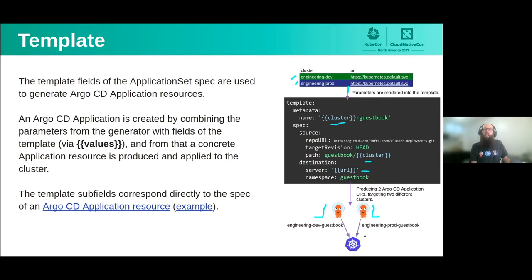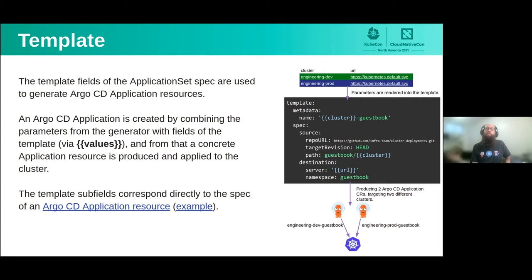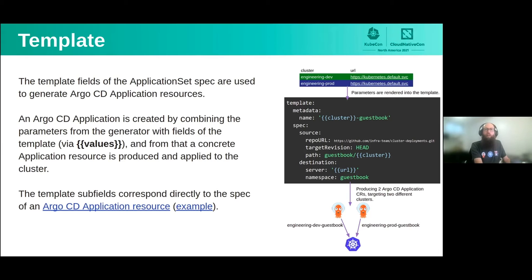That's the Application Set data flow in a nutshell: generators produce parameters, templates consume parameters, the Application Set controller turns those rendered templates into Argo CD applications, and from there it's Argo CD's responsibility to deploy those to the cluster — looking at the Git repository, comparing it with what's in Kubernetes, and keeping them in sync. Let me show you a demo of all that.